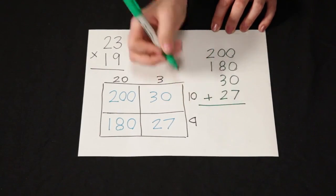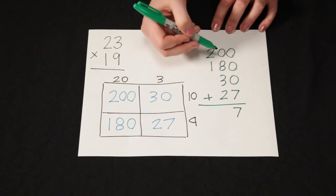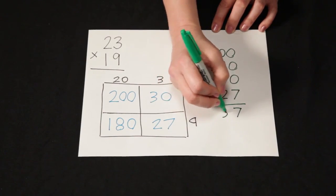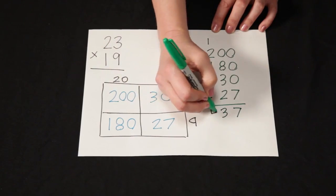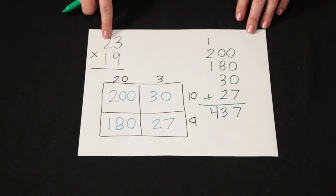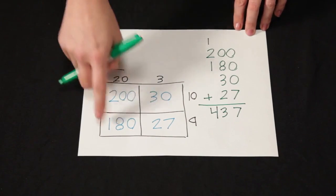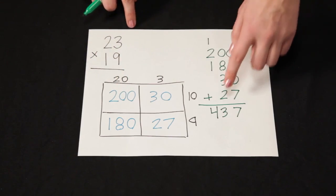Let's go ahead and add these together. 7 here, 3 plus 2 is 5, plus 8 is 13. Regroup my 1. 1 plus 2 plus 1 is 4. So when I multiply 23 times 19 with the area model, my answer is 437.